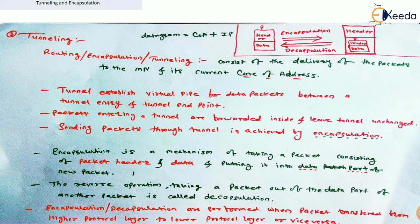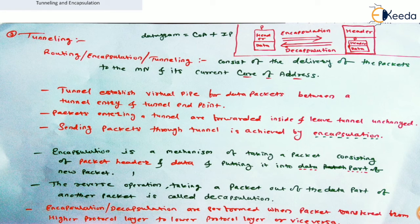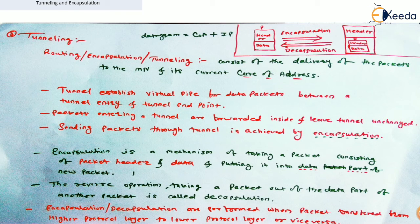You can see in the diagram, in the upper right corner in red color, there is one packet P consisting of a header and data. That packet is embedded inside another packet, which also consists of a header and data. The previous packet P is inserted into the data field of the outer packet. This procedure is called encapsulation.